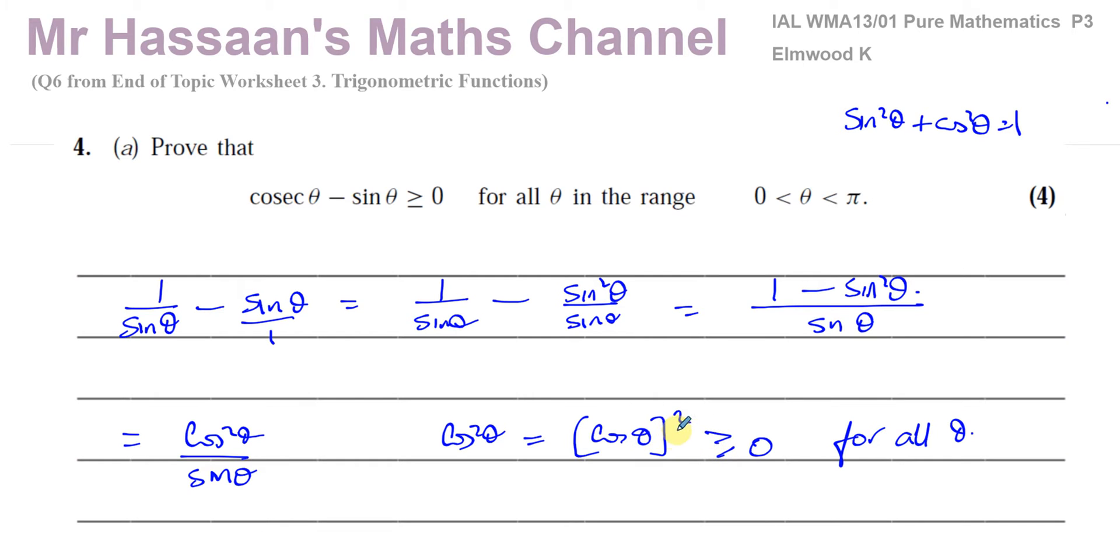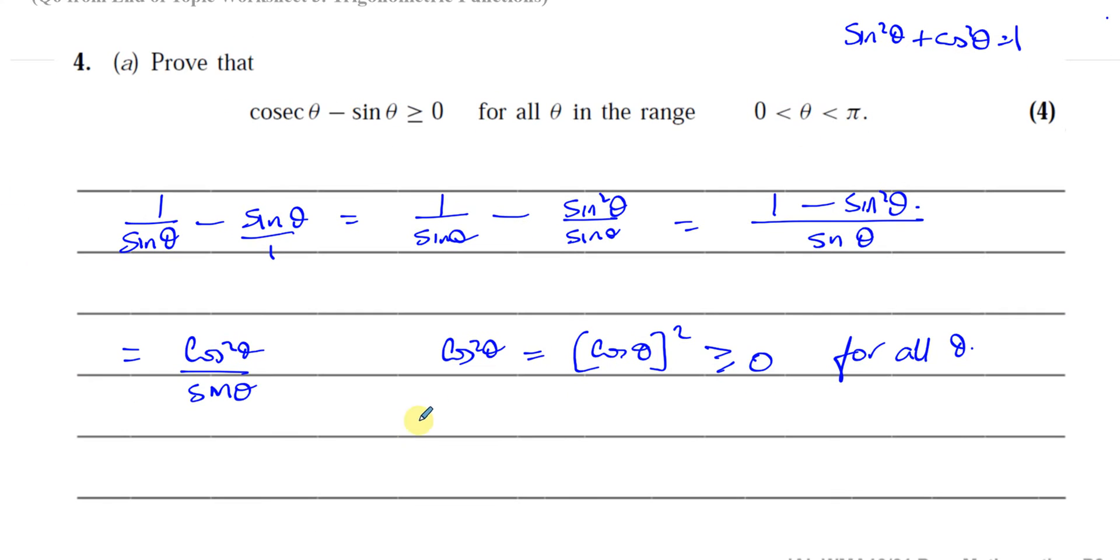So cos θ squared will always be greater than or equal to 0. And we can say that sin θ is always greater than 0 in the range of θ between 0 and π. It will never even equal 0 because the sine curve between 0 and π is always positive. It reaches 0 at 0 degrees and 0 at π degrees. But here, θ is greater than 0 and less than π.